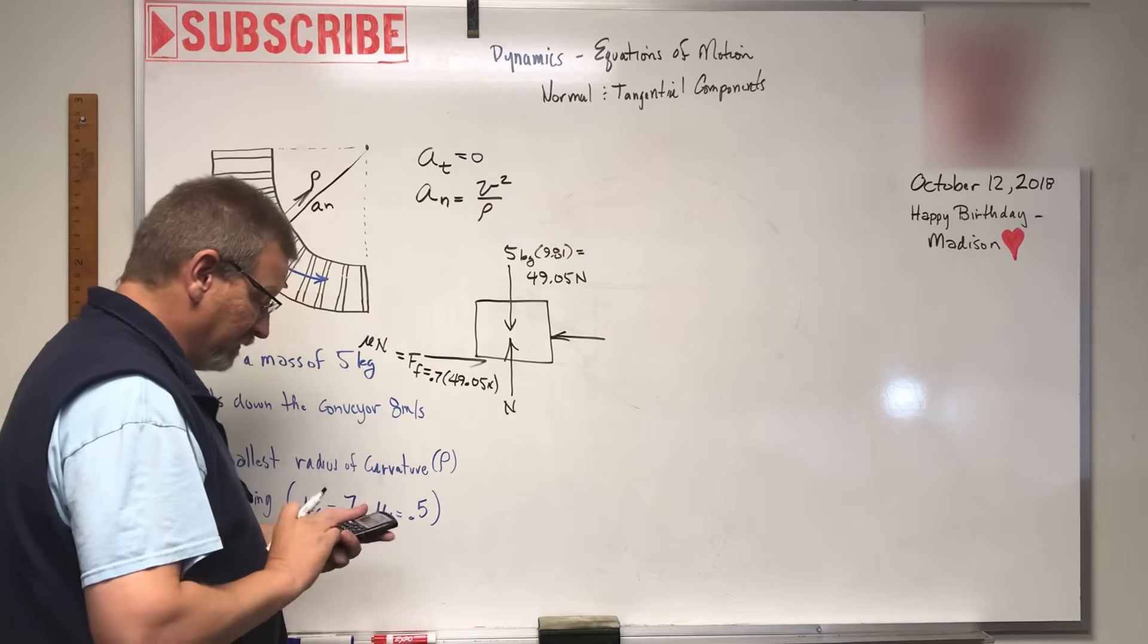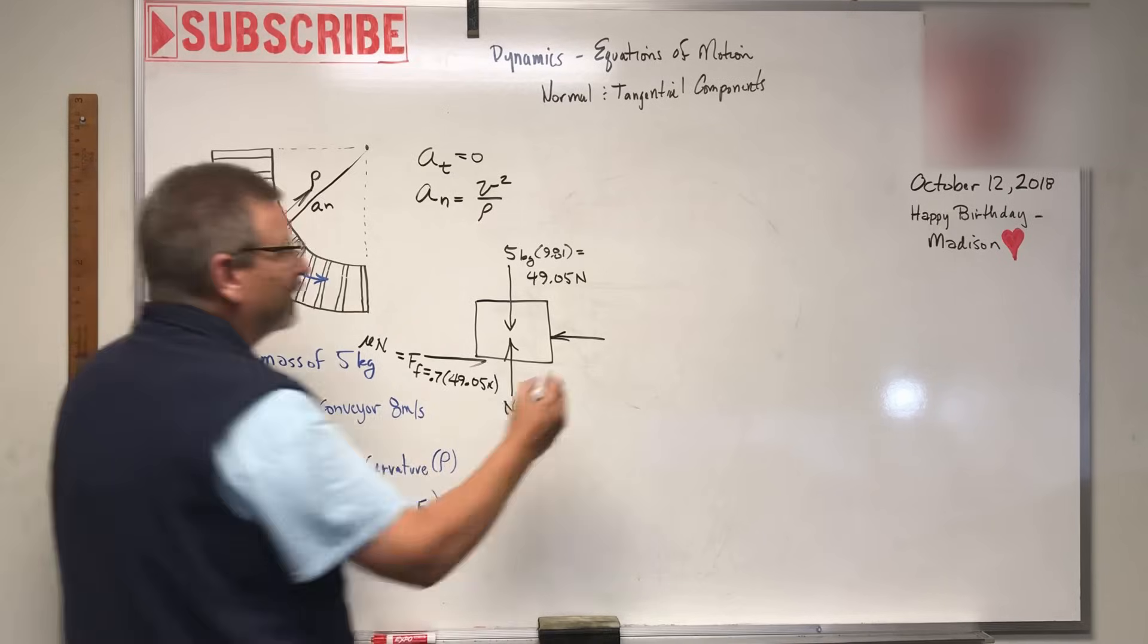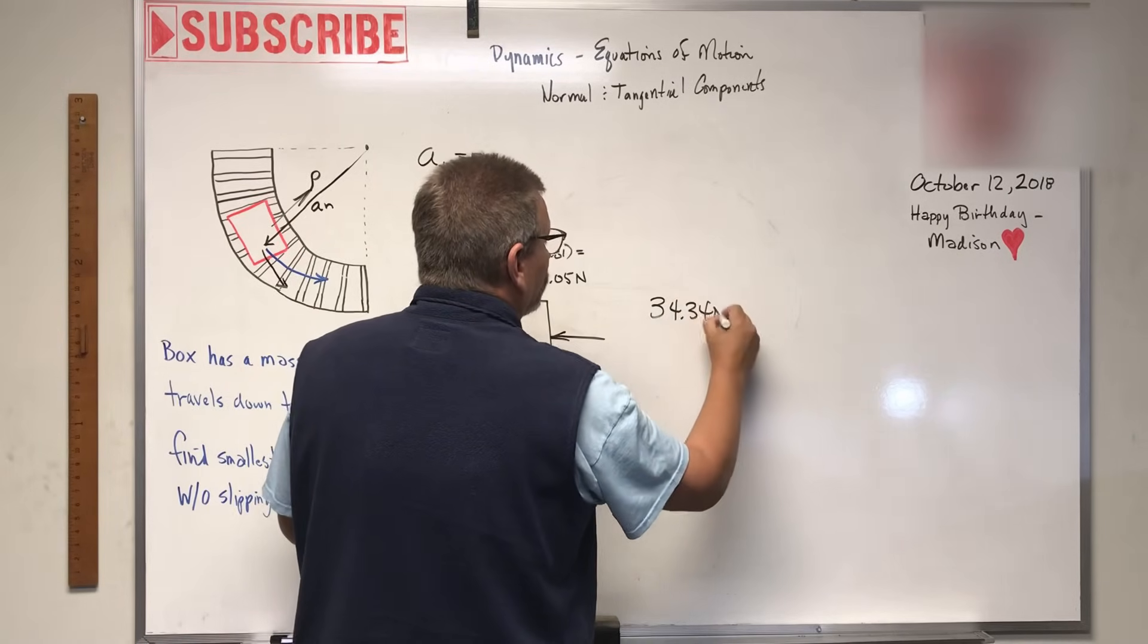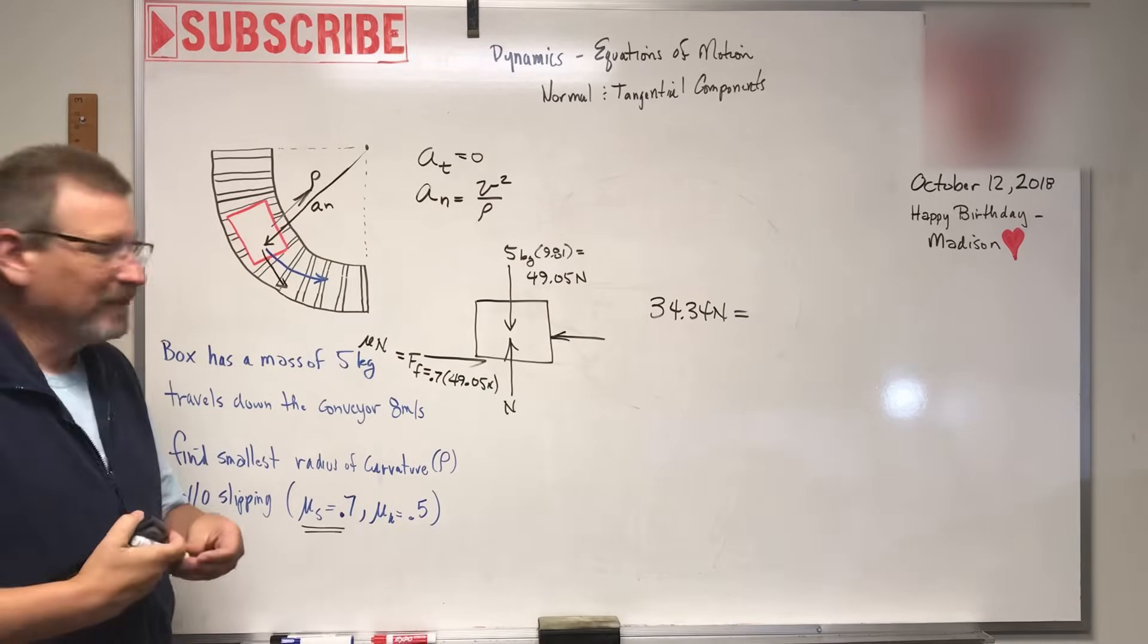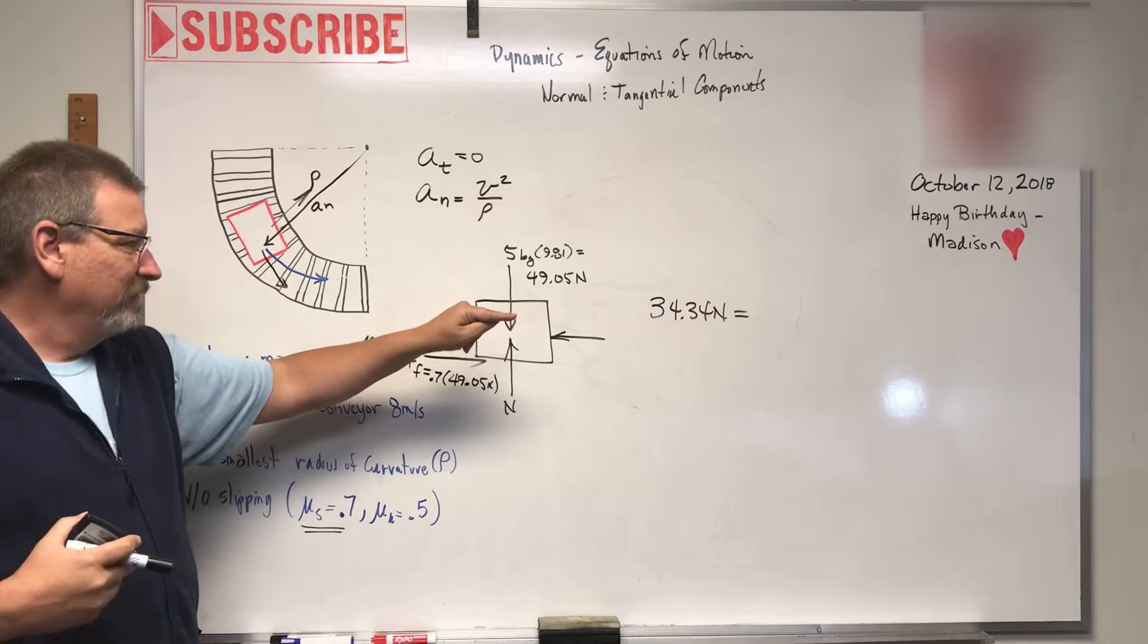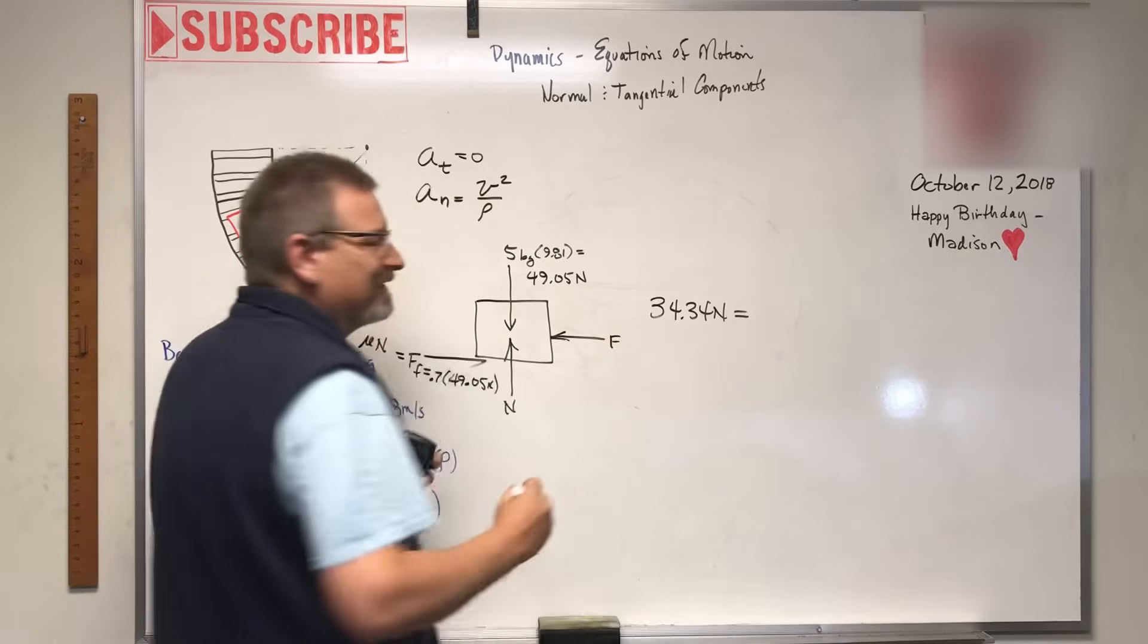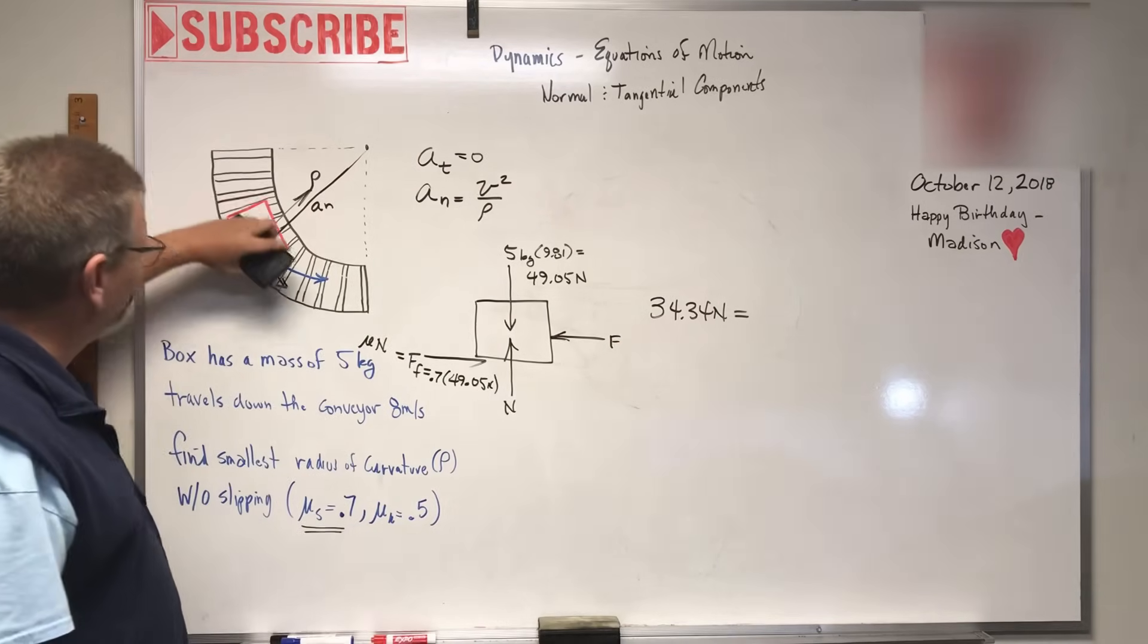That is 0.7 times the normal force, which is 49.05 newtons. So the force is 0.7 times 49.05 equals 34.34 newtons. That's all that box can take without slipping - that's the force here that it's going to take to make that box slip.